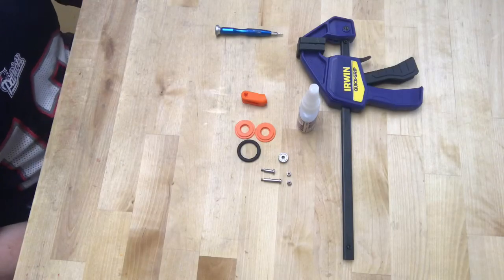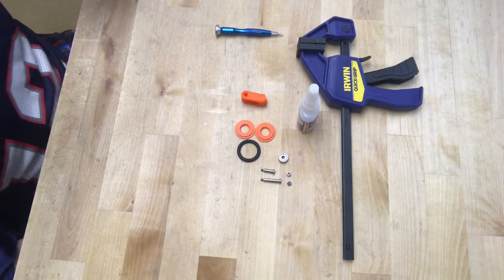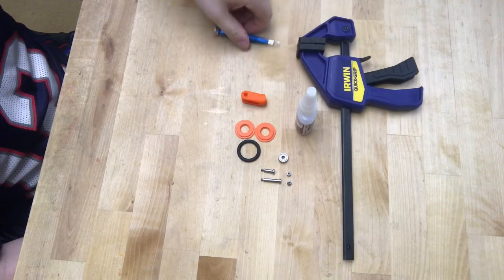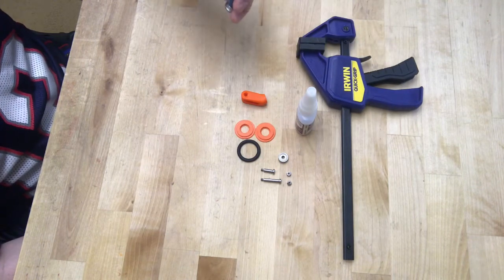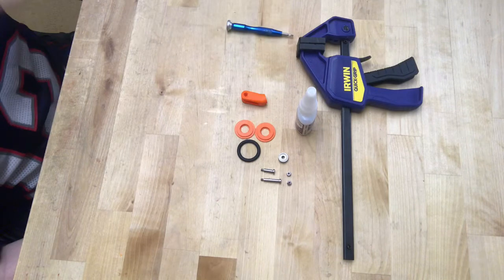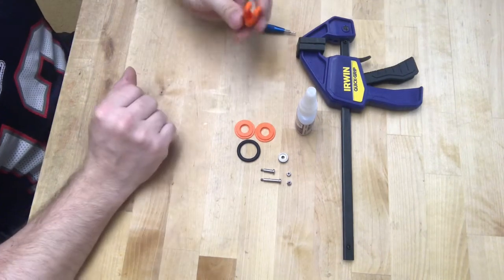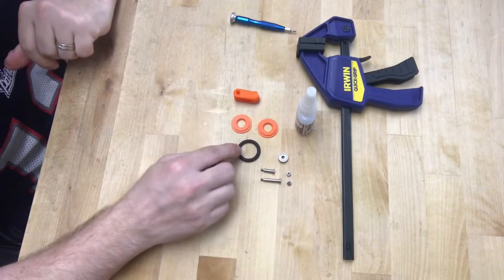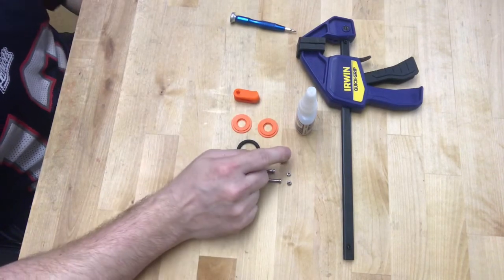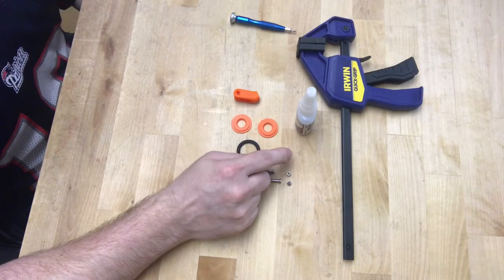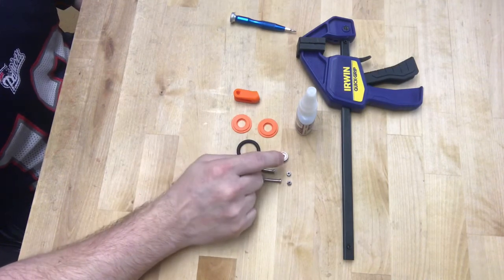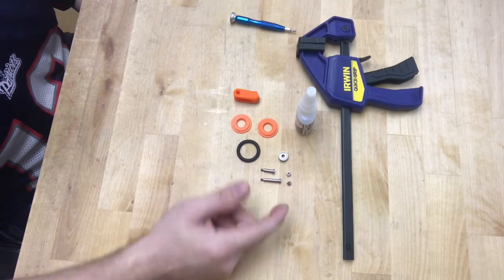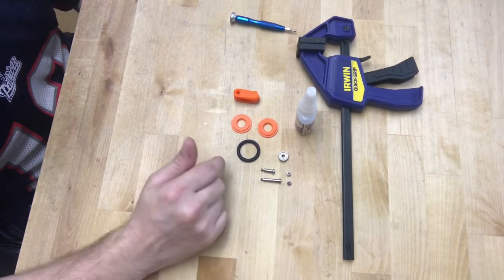The first assembly we're going to tackle is the caster. Tools we're going to need are some CA glue, a clamp, and a 2 millimeter Allen wrench. The parts we're going to need are the caster itself, two of the hubs, one of the Lego O-rings, the 12 by 4 by 5 millimeter stainless steel bearing, your two shoulder bolts at different sizes, and two nylon locking nuts, M3.